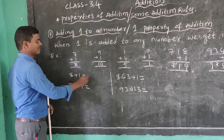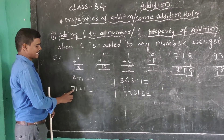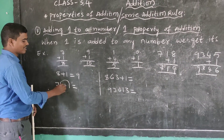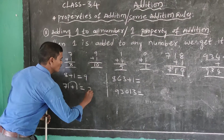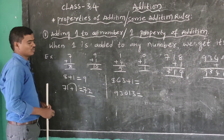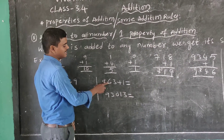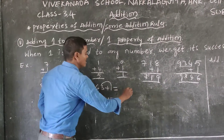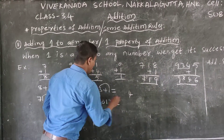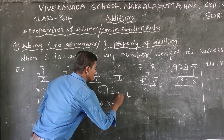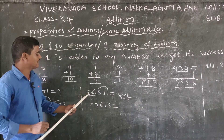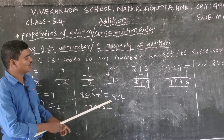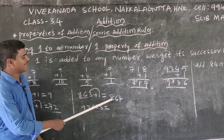Next: 8 plus 1 equals 9. Then 71 plus 1 — ones place: 1 plus 1 equals 2, tens digit stays 7, so the answer is 72. Next: 863 plus 1 — ones place: 3 plus 1 equals 4, remaining digits stay the same, so 863 plus 1 is equal to 864.